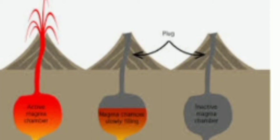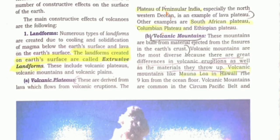The next sub-topic is the effects of volcanoes. Volcanic eruptions are not only destructive — they also have constructive effects. The first constructive effect is that they result in the formation of landforms. Landforms created on the Earth's surface are called extrusive landforms, such as volcanic plateaus, volcanic mountains, and volcanic plains.